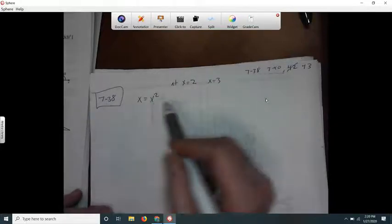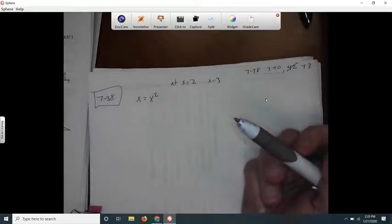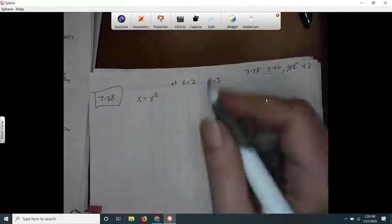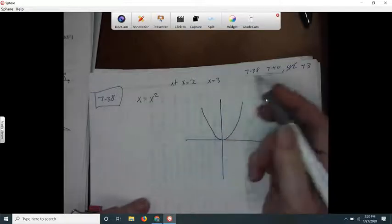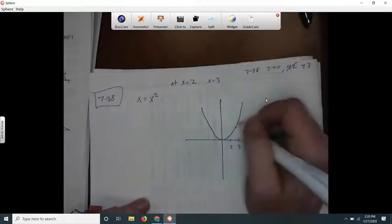Okay, so this says write an equation for the line connecting the points on the parabola. So there's a parabola and there's some points at x equals 2 and x equals 3, and they want the equation of the line that connects them.